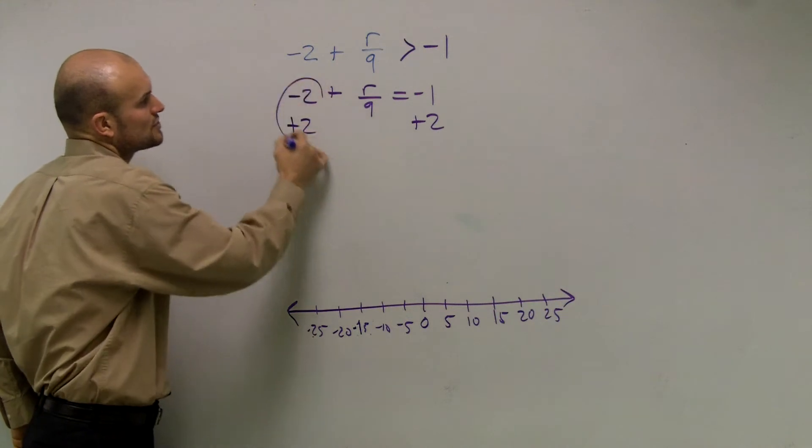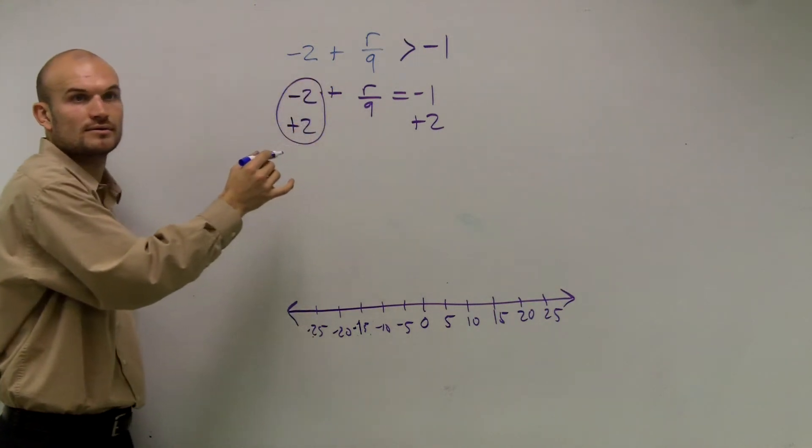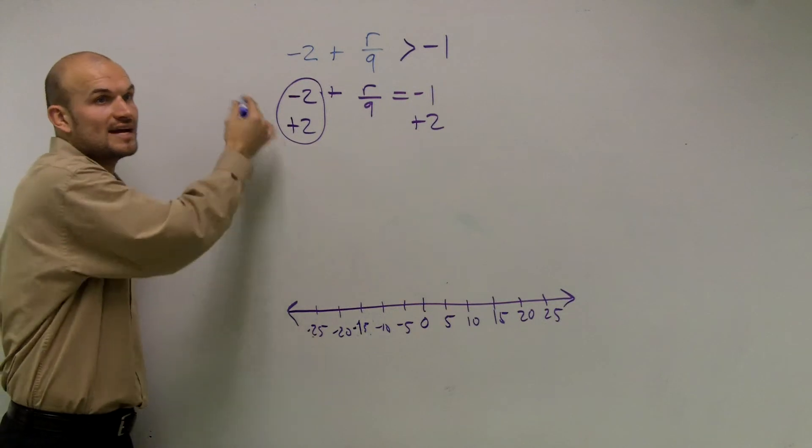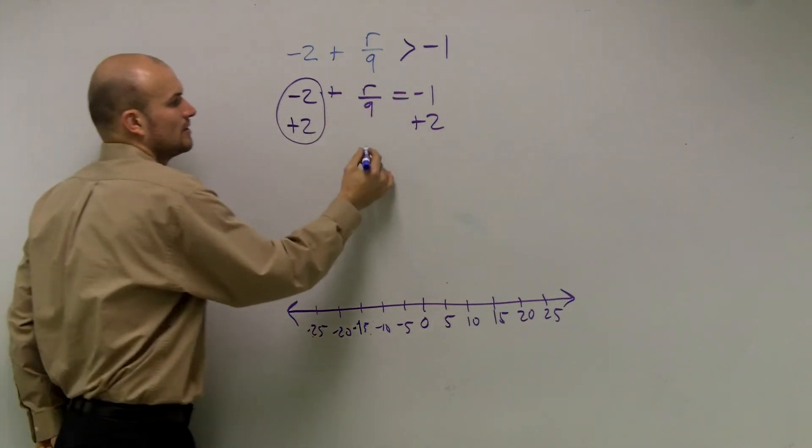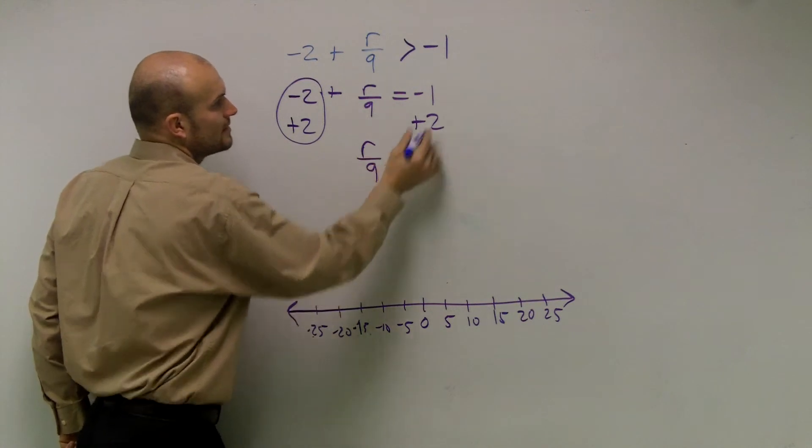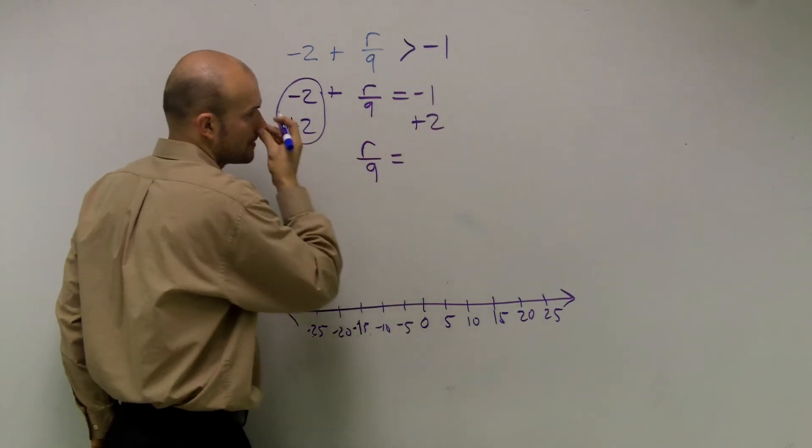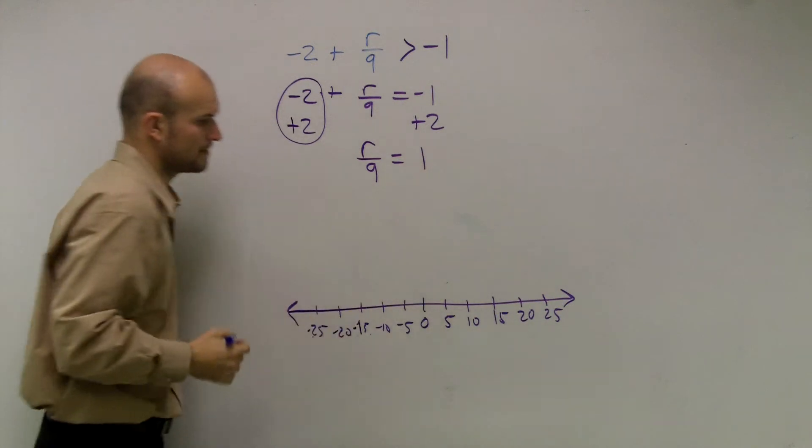Remember, if you were to circle these two, negative 2 plus 2, that goes to what? Zero. And that's what you want. You want to get rid of all the numbers that are on the side of your variable. Now, I have r over 9. Negative 1 plus 2 is 1.